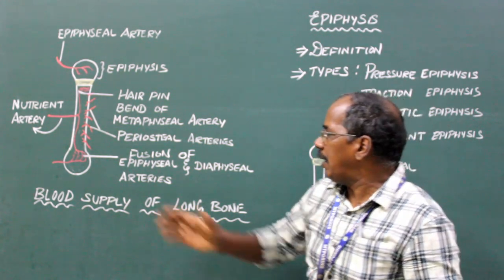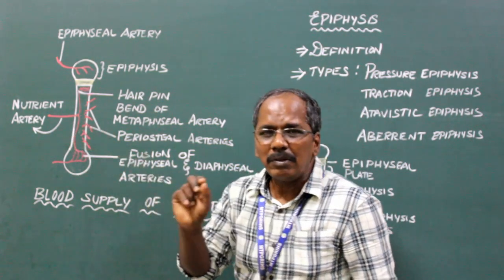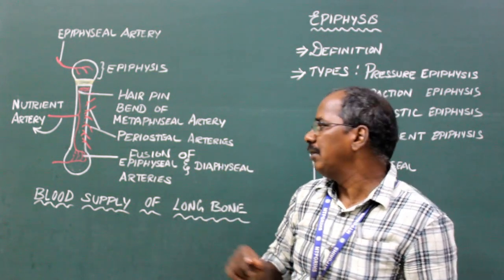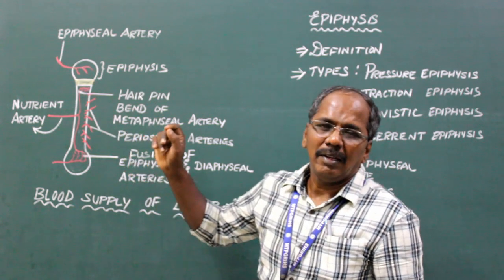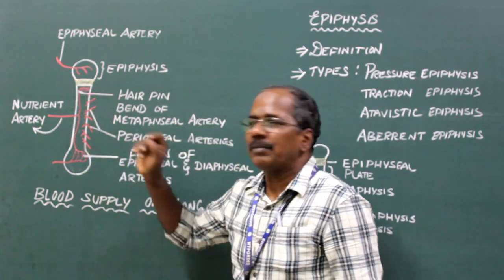Nutrient artery enters the shaft through nutrient foramen and divides into ascending and descending branches.